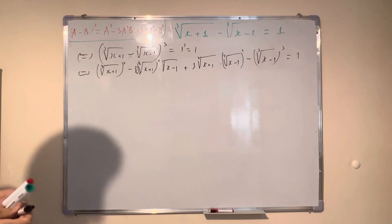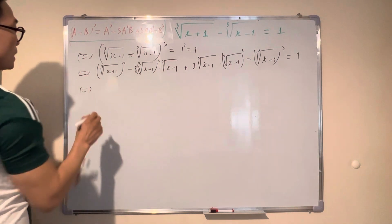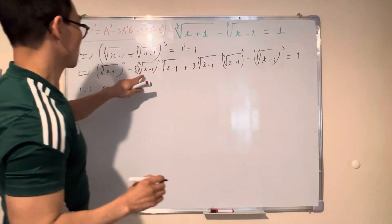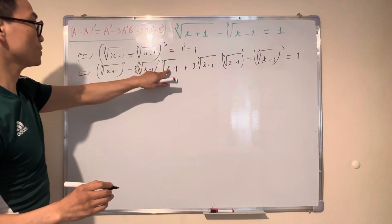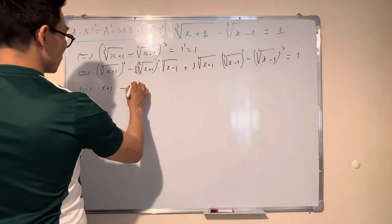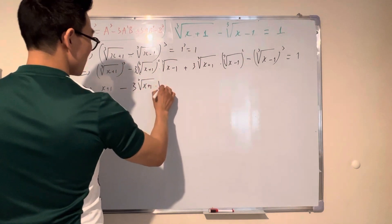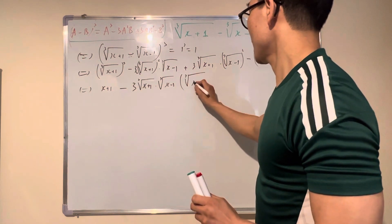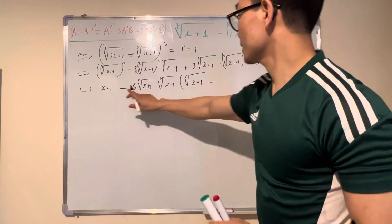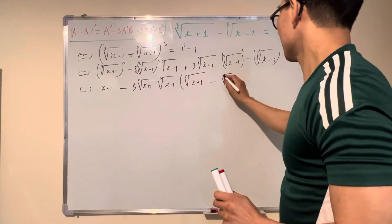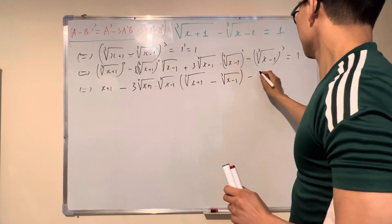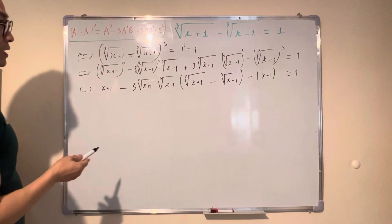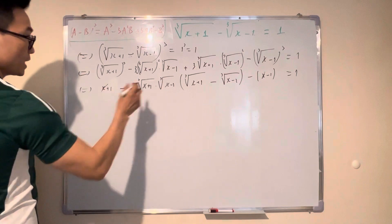Now if we simplify the left hand side: that term cubed equals x+1, and you see these two terms have the same factor 3 times cube root of (x+1) times cube root of (x+1). Take that outside the bracket. Inside the bracket, this one times cube root of (x+1), and then take away d because the negative is out, so inside we have two negatives — that gives cube root of (x+1) times (x+1).